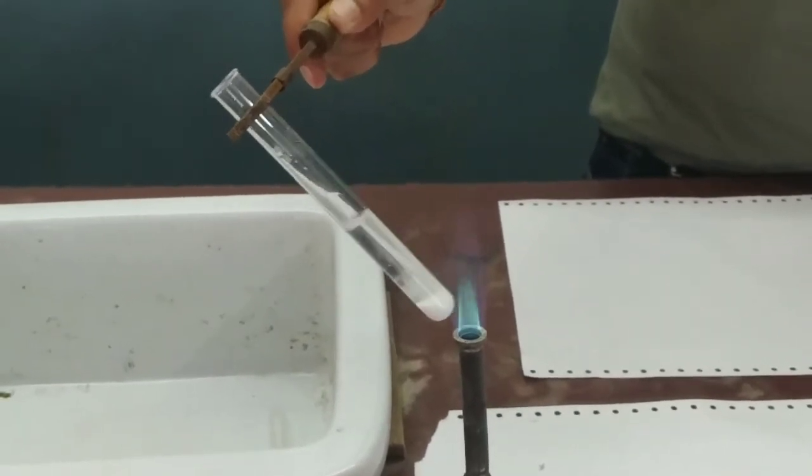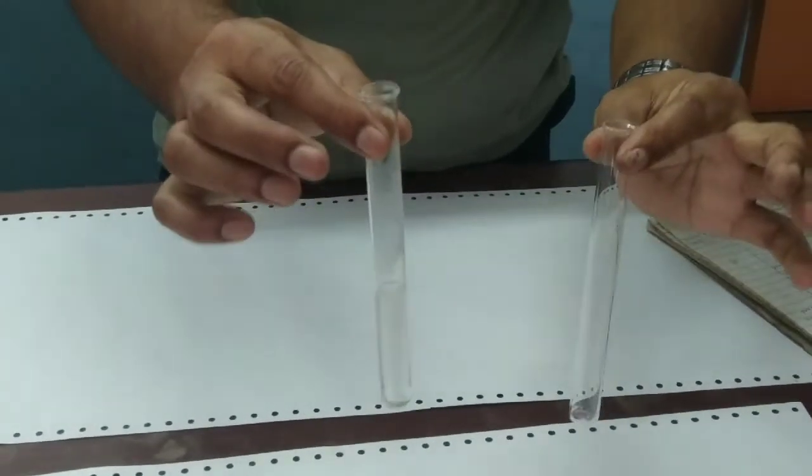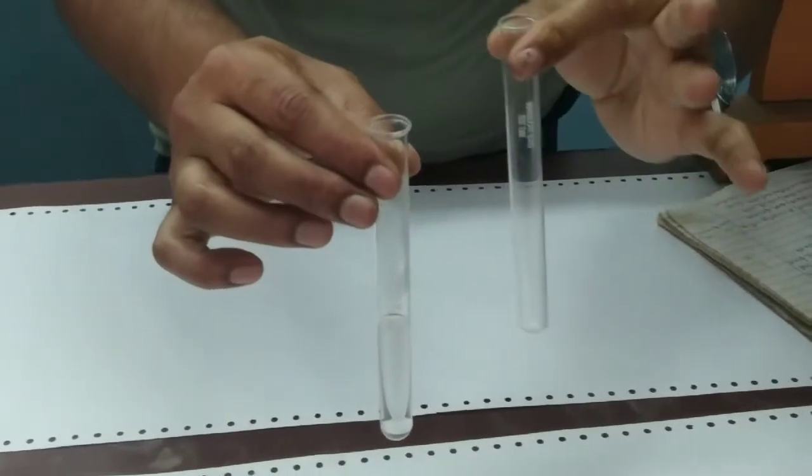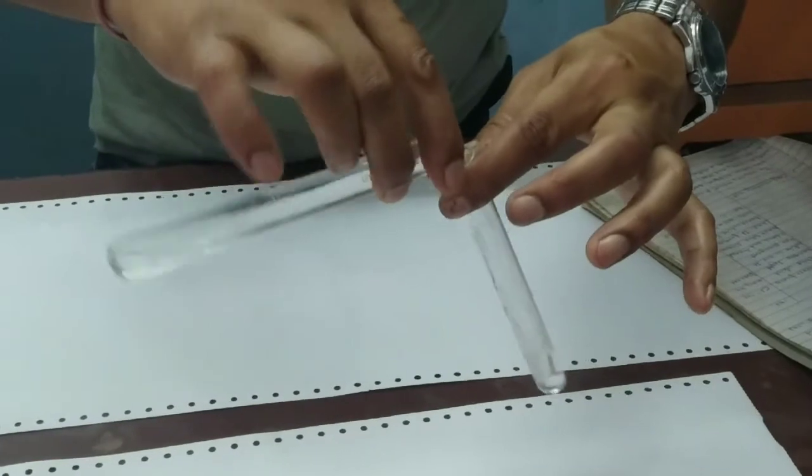At the edges of the flame. For the test of the chloride we need to do two tests. So we will divide the content into two parts.